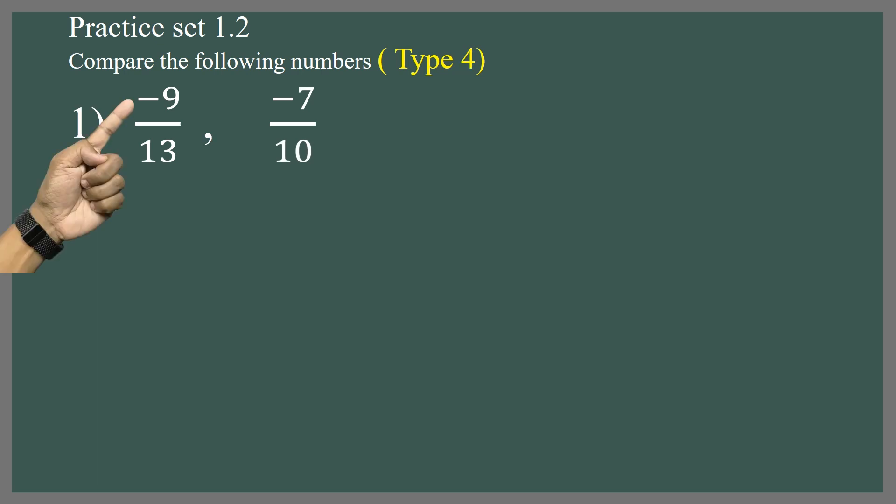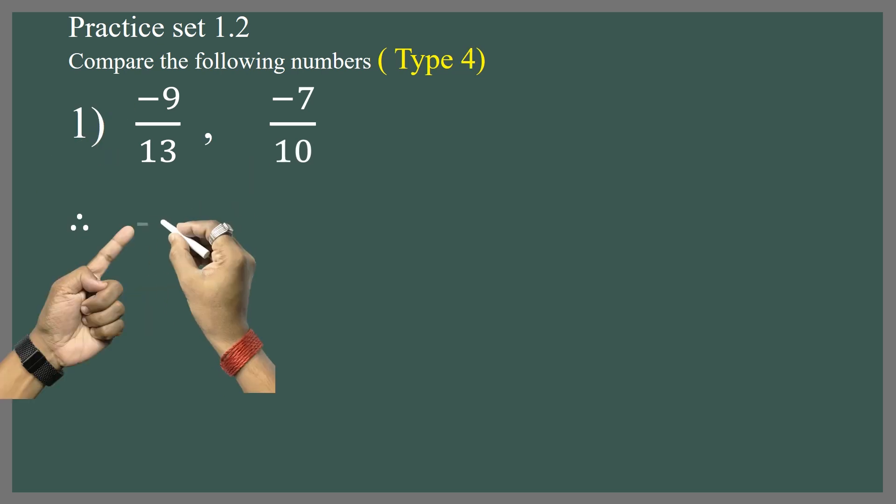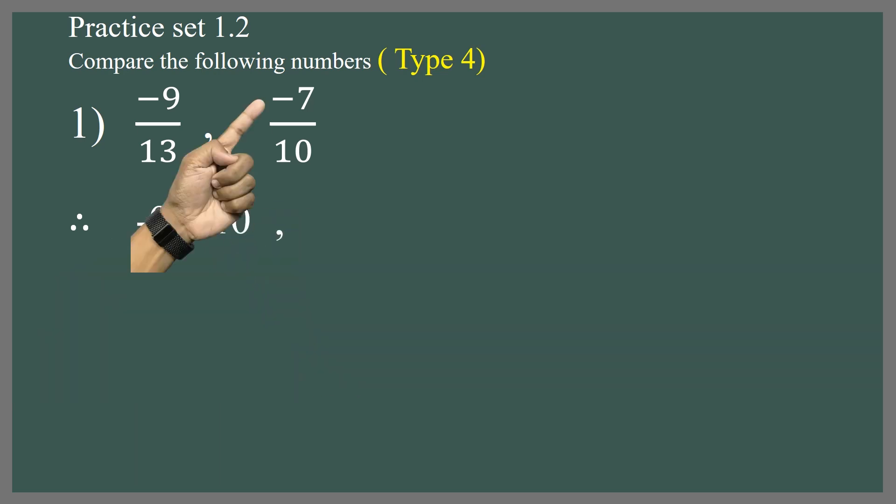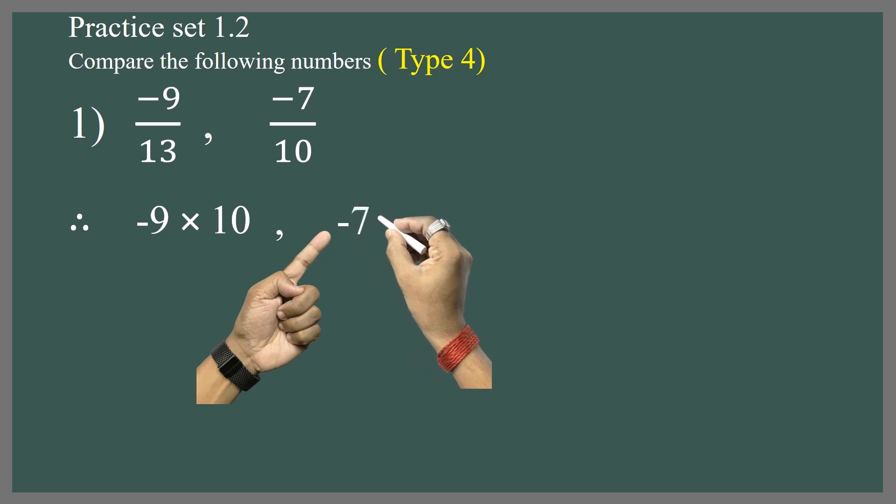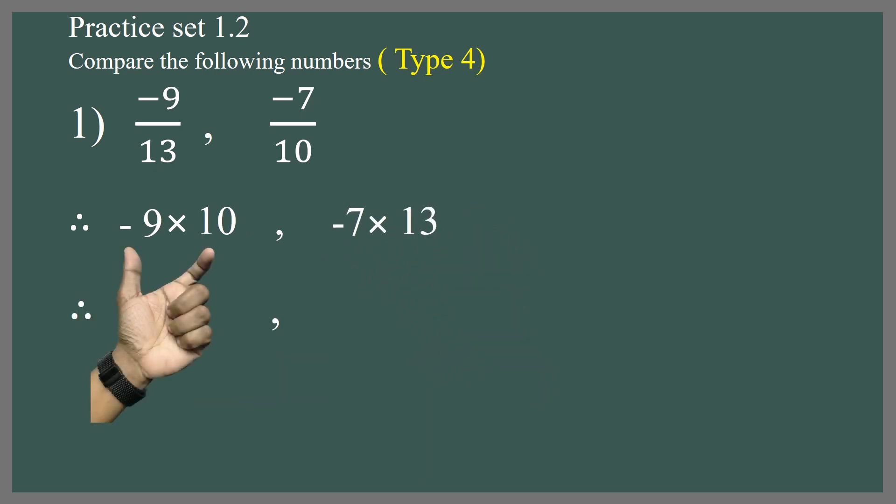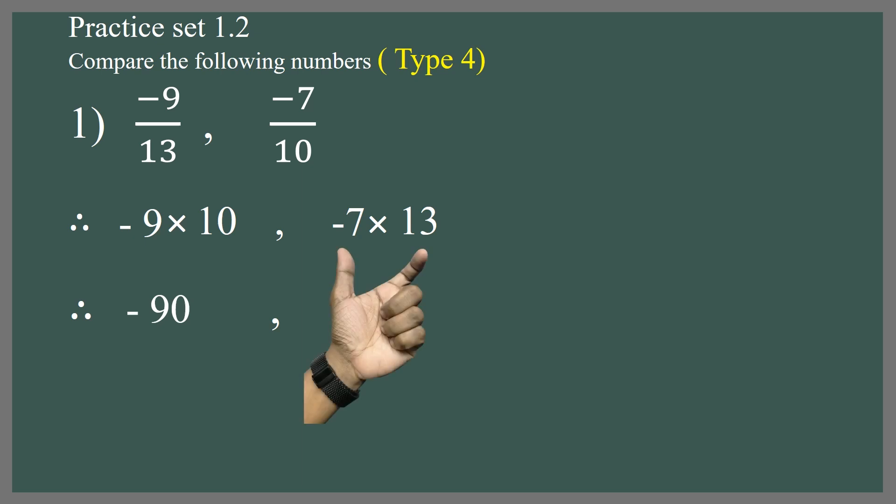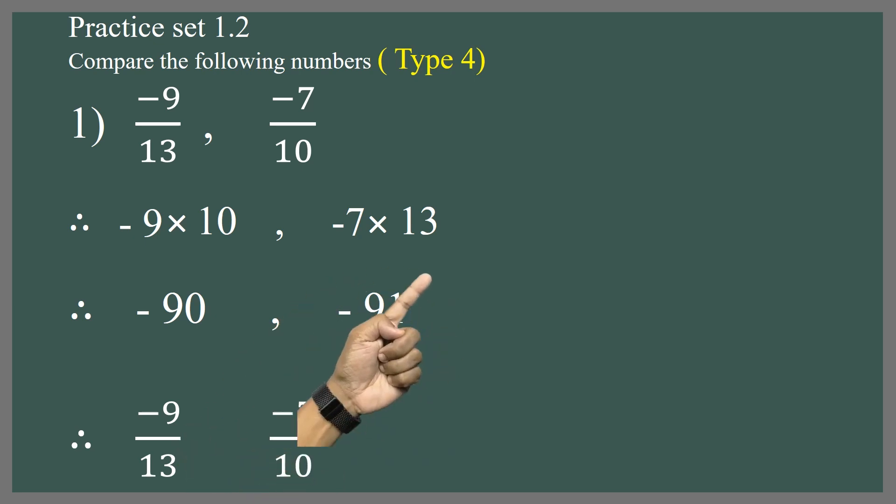So, first step, cross multiply. That is, minus 9 into 10 and minus 7 into 13. Hence, minus 9 into 10 is minus 90 and minus 7 into 13 is equal to minus 91. At the same time, minus 91 are smaller. And even now, this fraction minus 7 upon 10 is small.